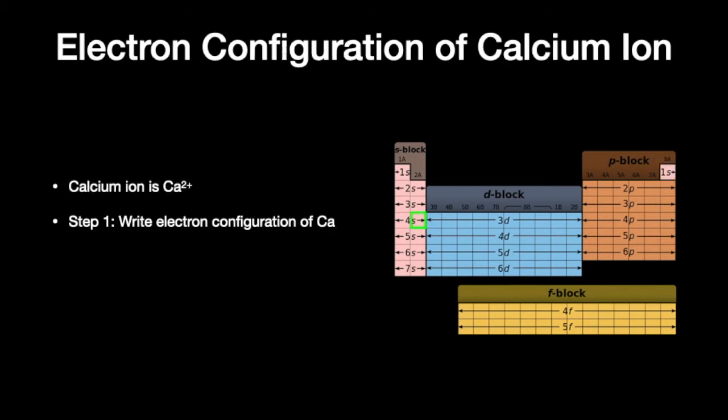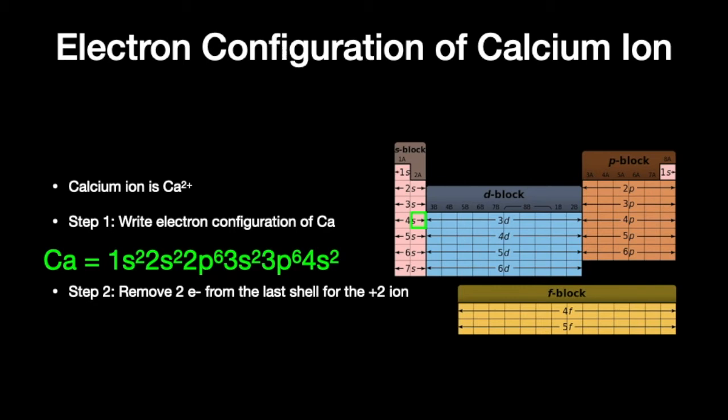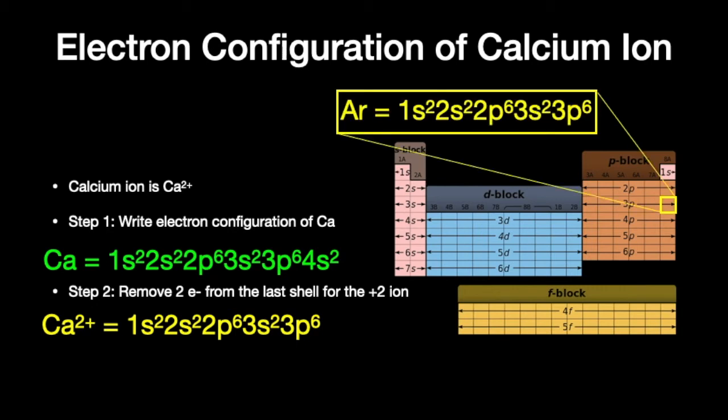Let's take a look at calcium ion. Calcium is in group 2 of the periodic table and has a plus 2 charge. We write out the electron configuration for calcium — it's in period 4, so it has quite a few electrons. If you look at the last part of the electron configuration, it has 4s2. We remove two electrons from the last shell to create the plus 2 ion by erasing the 4s2 portion, giving us the electron configuration identical to argon.